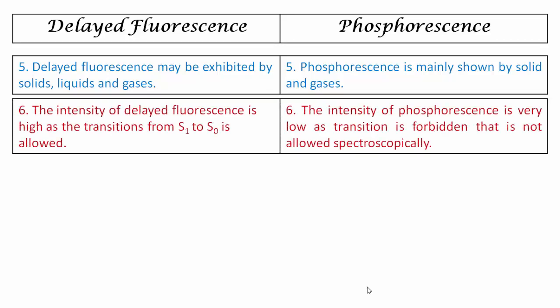The last point: the intensity of delayed fluorescence is high. According to the selection rule, the intensity depends on the energy levels and states involved — specifically, whether the transition takes place between states of the same multiplicity or states of different multiplicity. In delayed fluorescence, the transition takes place between S1 and S0, which are states of the same multiplicity, and therefore the intensity is high.